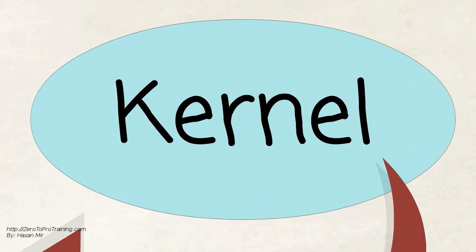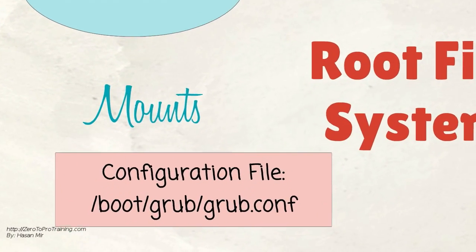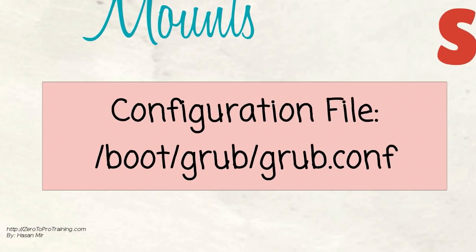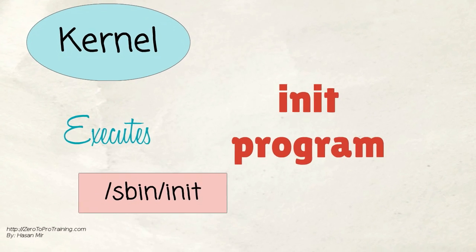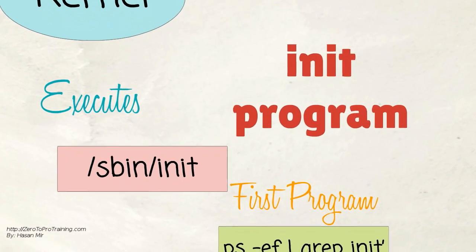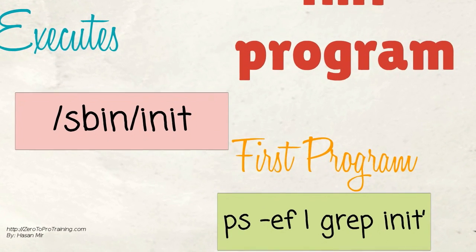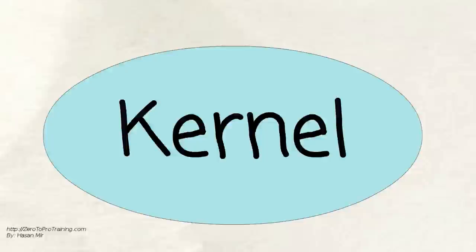Now let's talk about the kernel. It mounts the root filesystem as specified in the GRUB config file. The kernel executes the init program located in the /sbin folder. The init program becomes the very first program to be executed and gets a process ID of 1. You can run the ps command to verify. In short, the kernel loads the filesystem and runs the init program.